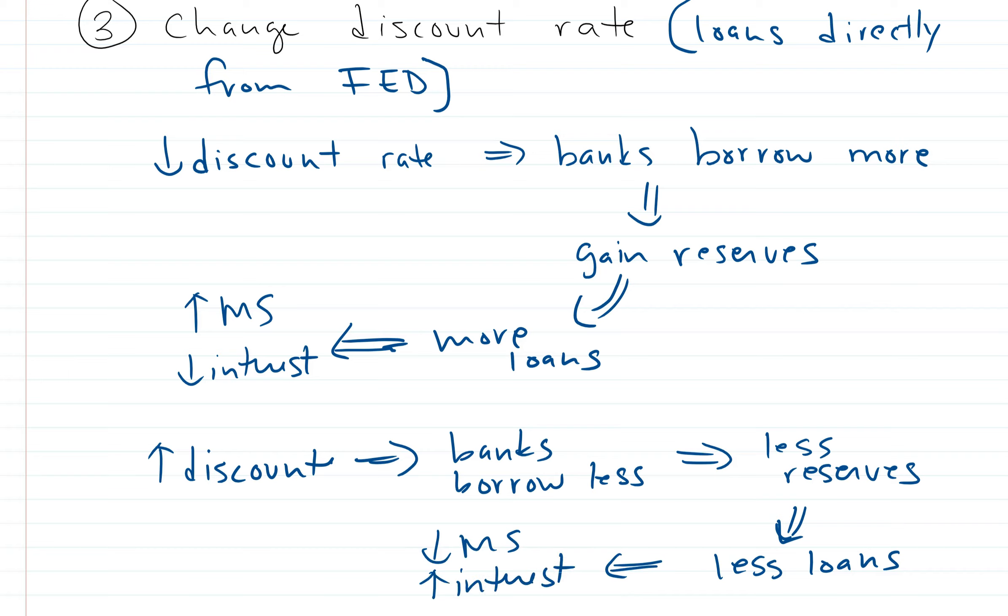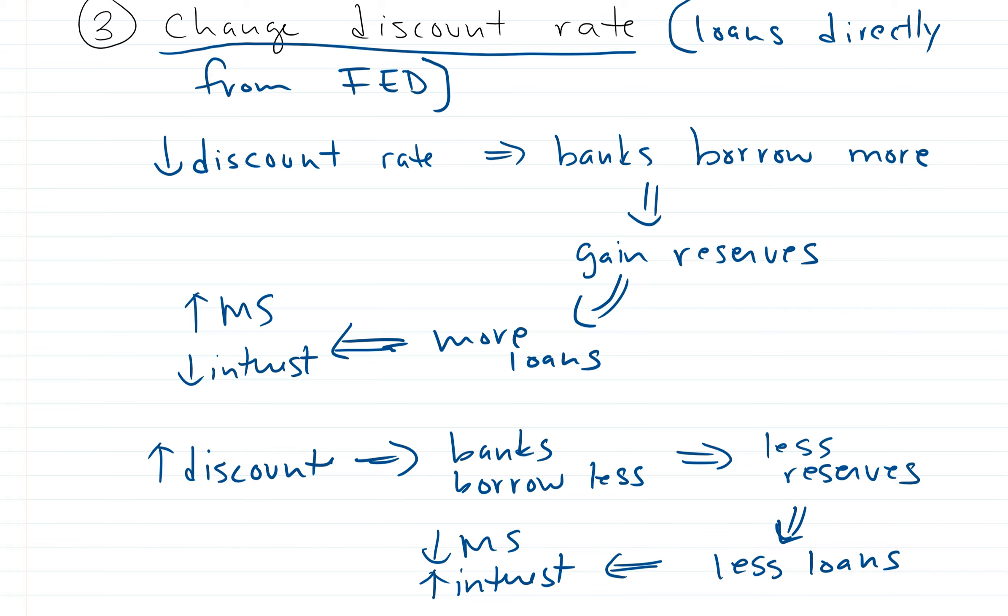So this is another policy they could do. Typically, this is not the most important policy of the Fed. These discount loans are typically saved for banks that are in trouble in some way. And they haven't in the past, at least, been used as their main policy for putting reserves into the banks. The main policy to put reserves in the banks or to take them out of the banks is the open market operations that were discussed in the previous video. Hopefully that makes sense. There'll be one more video that's not by me that can kind of summarize all of this.